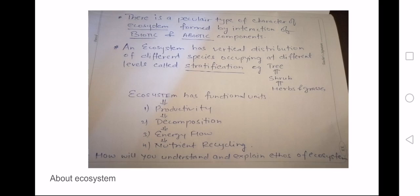Ecosystem has got certain fundamental units: first is the productivity, decomposition, energy flow, and nutrient cycling.